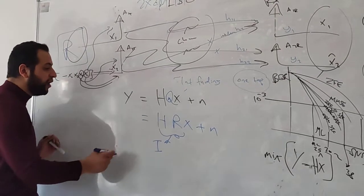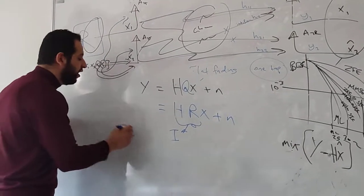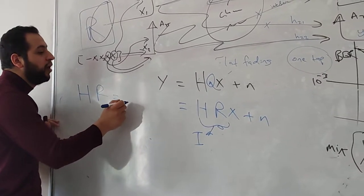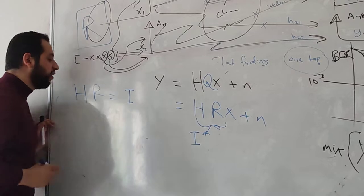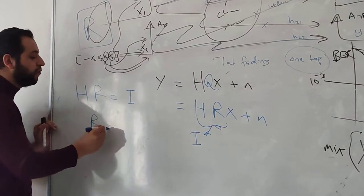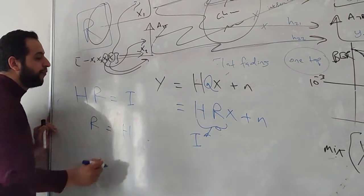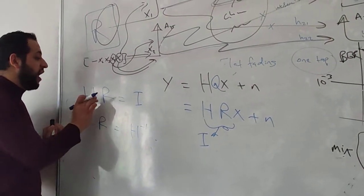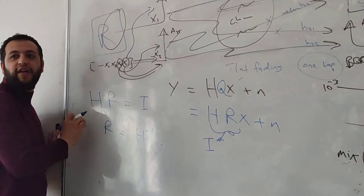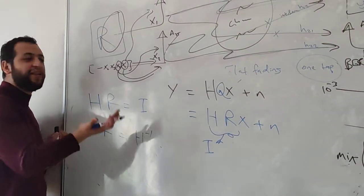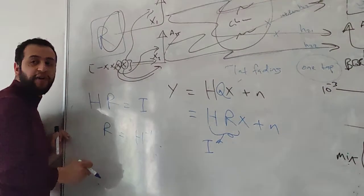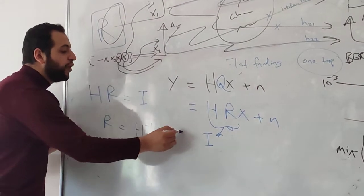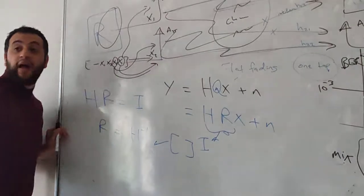When I say H multiplied by R equals the identity matrix, then R should be equal to H inverse. H inverse is like H divided by H equals 1, but in matrices we cannot divide — we say 1 over H, we write H to the minus 1. This is true when we have a square matrix.